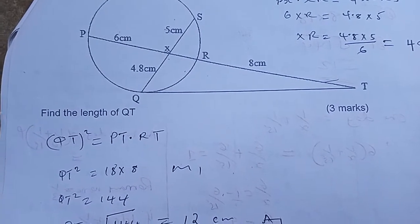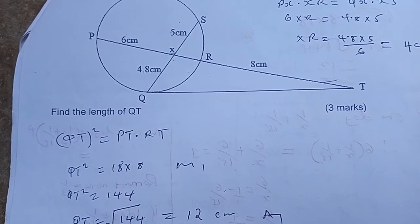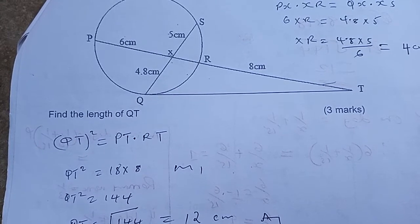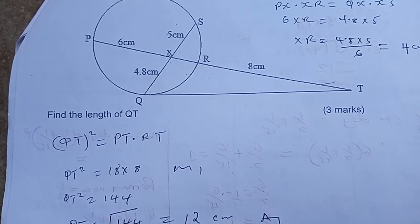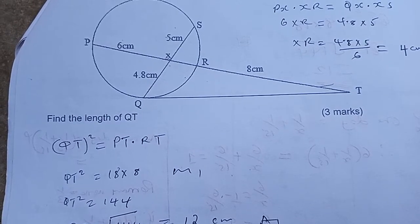Therefore, using the formula, the tangent QT squared is equal to PT times RT.